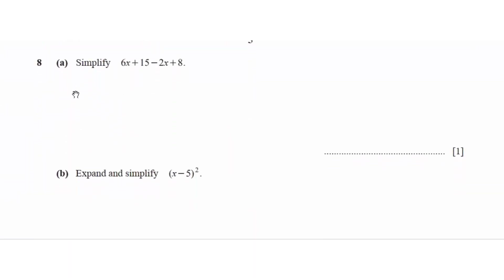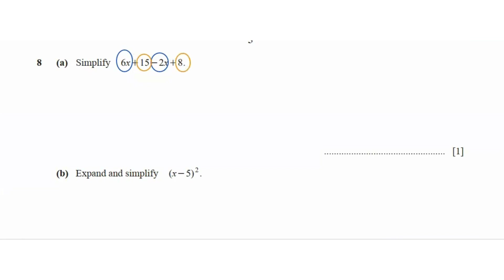Question 8 says simplify 6x plus 15 minus 2x plus 8. Collect like terms: 6x minus 2x plus 15 plus 8, which is going to be 4x plus 23.